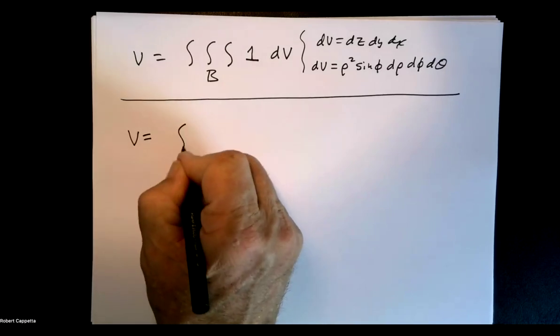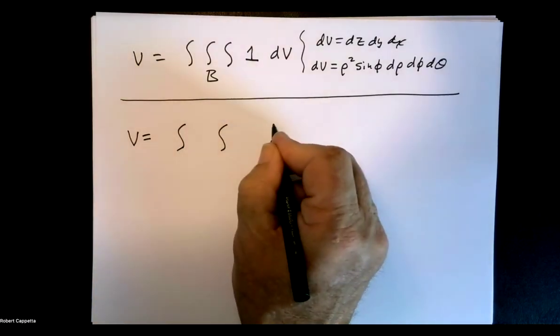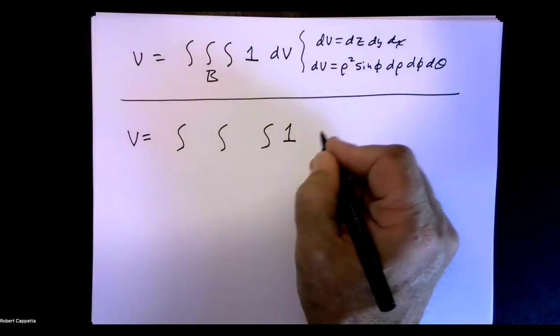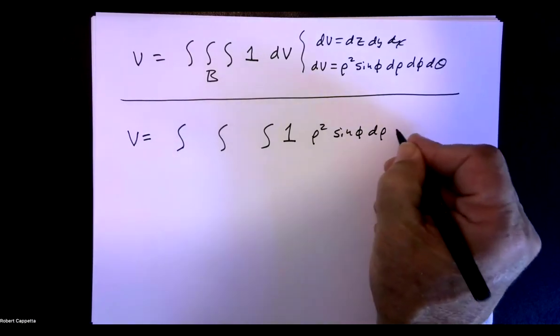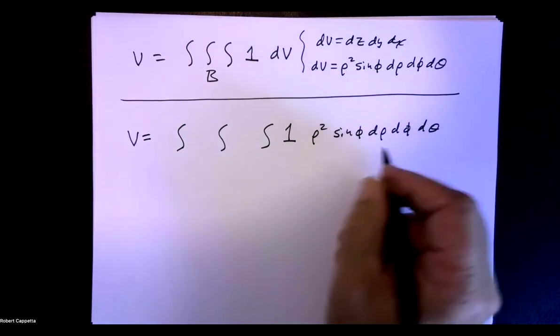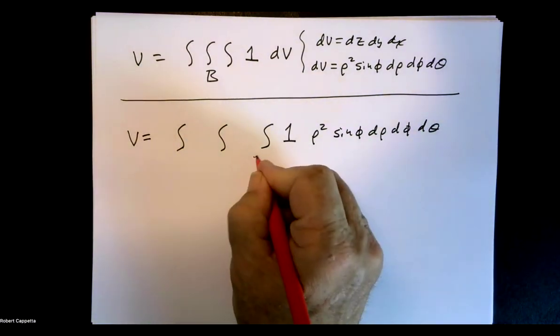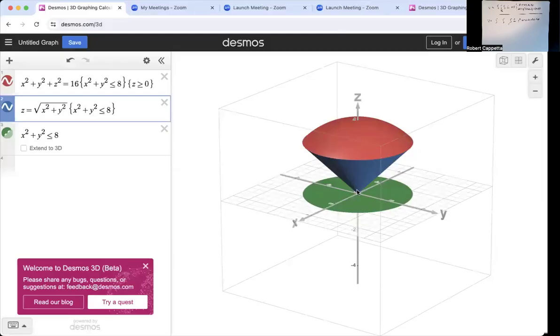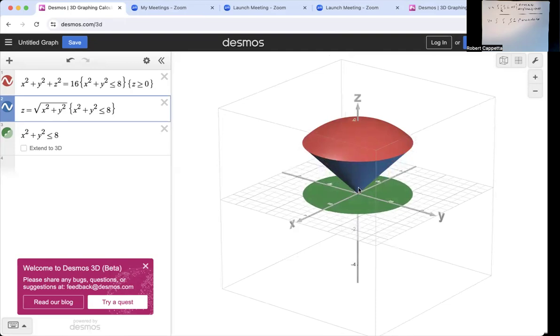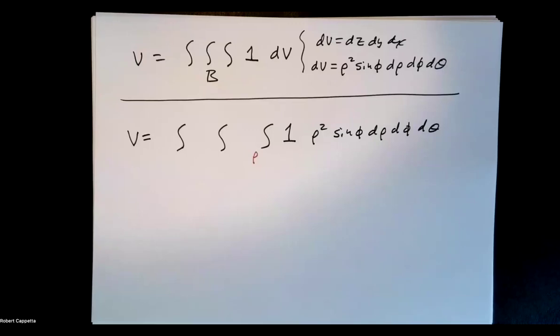So looking at our rule here, the volume will be the triple integral of 1, dv being rho squared sine phi d rho d phi d theta. Rho first. What does rho range from? Now to recall our picture, rho started at 0. How far did it grow until it hit that sphere or hemisphere? Rho starts at 0, it grows. You imagine the stick going until boom, until it hits the red thing. And the equation of the red thing is rho equals 4. So it starts at rho equals 0, and it grows until rho equals 4. So rho ranges from 0 to 4.